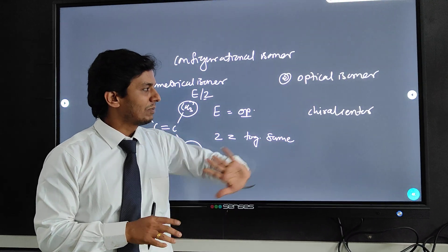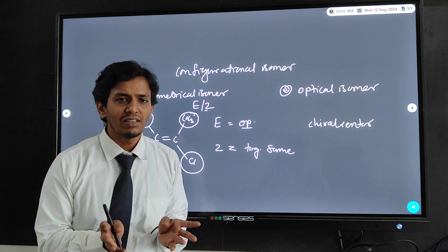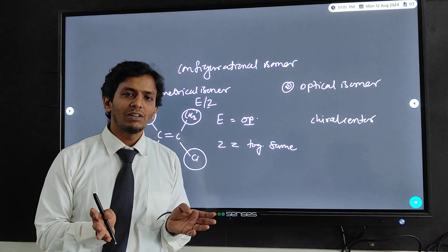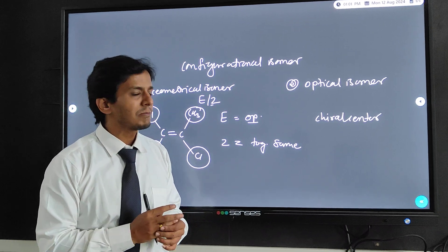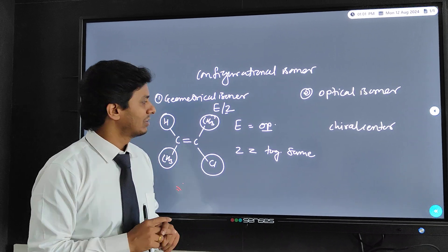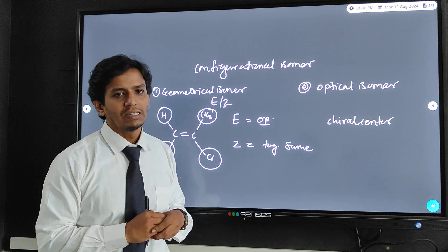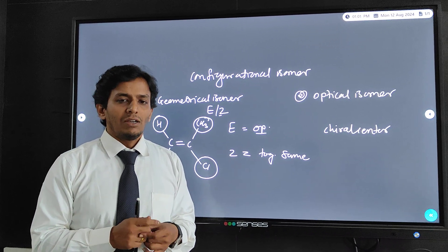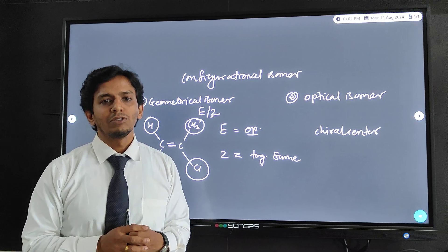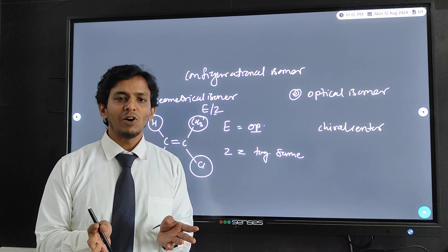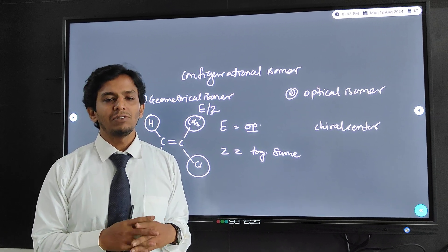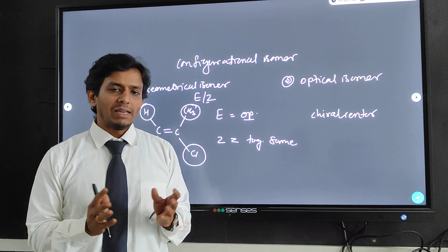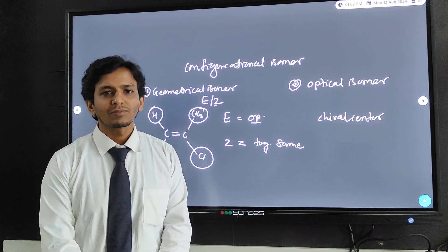In the next lecture, we will also focus on optical isomerism — how it arises due to the presence of a chiral center, what the importance of the chiral center is, and we will have a detailed focus on E and Z notation and how to assign it. Dear students, if you have any doubts, you can post in the comment box. My email ID is also mentioned on my YouTube channel. Thank you very much.